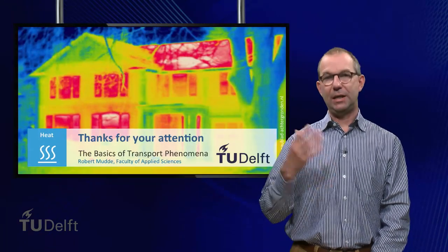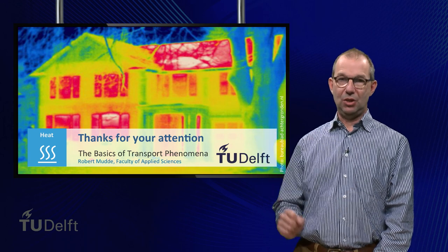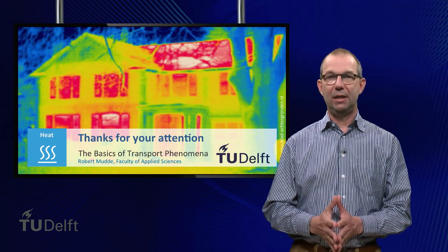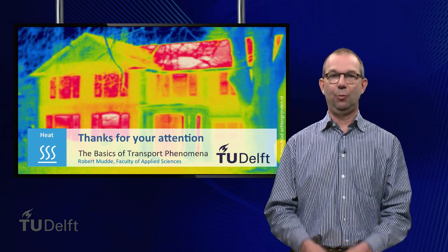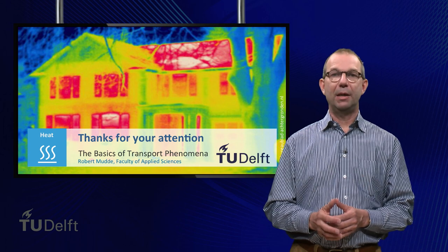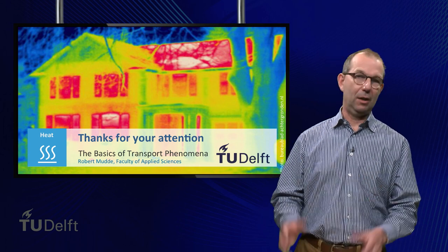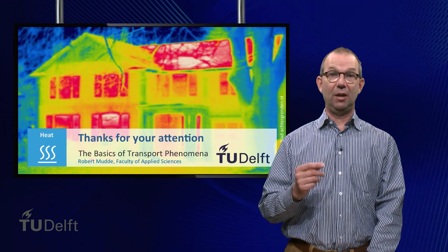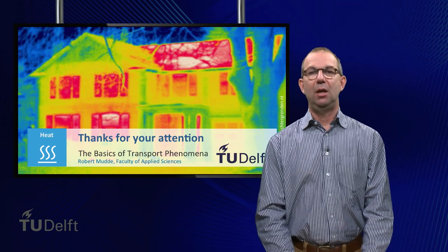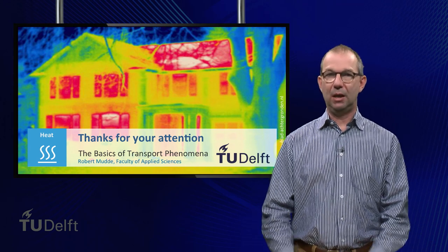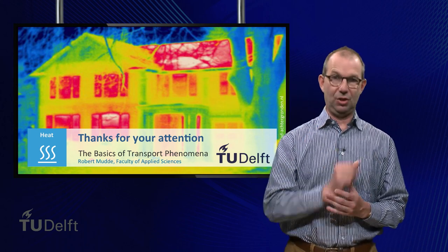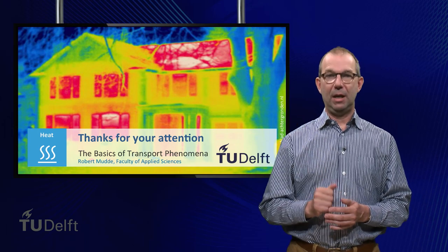With this, our lecture is ending. Behind me we can see the infrared photo of the house again. In one of the example videos we will calculate the heat loss through a single glazed window. You can also put what you have learned today into practice by going to the exercises and calculating how much money you can save by switching from single to double glazed windows. While making the exercises, it is useful to start thinking in terms of driving forces resulting in flows and, most importantly, resistances. Good luck and till next lecture.